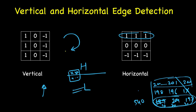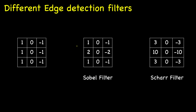This is just one filter, but in the literature there are many others for the same purpose. For vertical edge detection, researchers have tried variations: the Sobel filter uses values 1, 2, 1 and -1, -2, -1 in the columns, giving more importance to the central pixel. The Scharr filter similarly emphasizes the center but uses 3, 10, 3 and -3, -10, -3. Rotating these 90 degrees gives the corresponding horizontal edge detection filters.